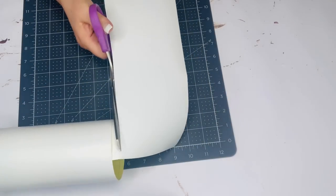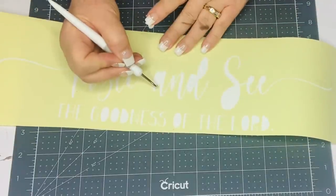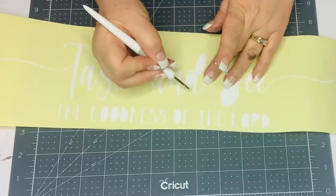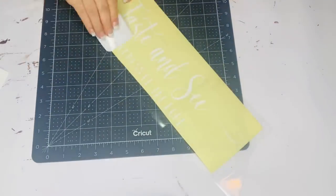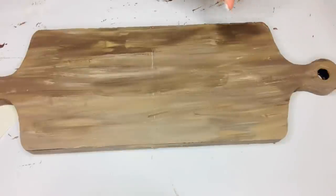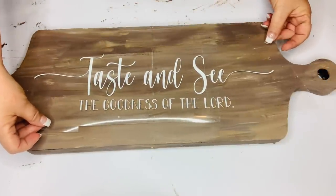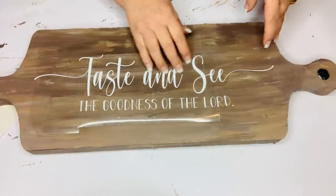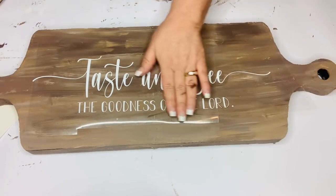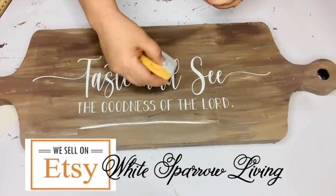So now I'm going to make a decal for the top of my cutting board using my cutting machine. And if you don't have a cutting machine, I am going to show you how to do the transfer method on another project that we're going to be doing. So I'm using my white vinyl and using the scripture, Taste and See the Goodness of the Lord. And I'll have the fonts listed in the description box below that I used. I know the top one is Cream Candy and I can't remember the name of the other one on the bottom. But I'll have that linked in the description box below so that if you do have a cutting machine, you can use these exact fonts or you can use your own.